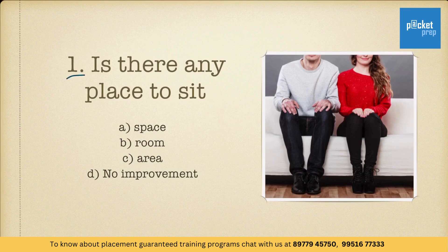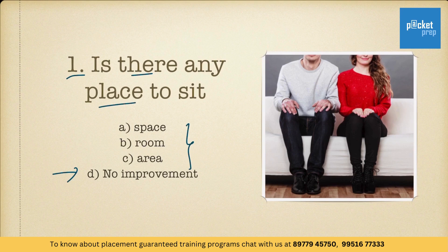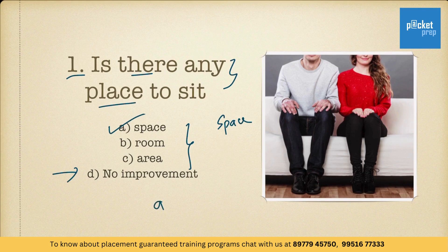Here is our first question: Is there any place to sit? If there is no improvement, you need to pick option D. Among these three options, the appropriate word to use in this sentence is option A — space. Is there any space to sit? This is what we usually hear someone saying. Therefore, the answer is option A. By using the word space, it improves this sentence.